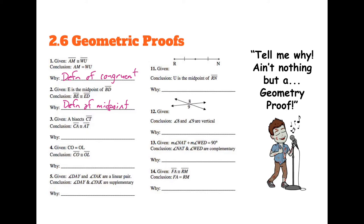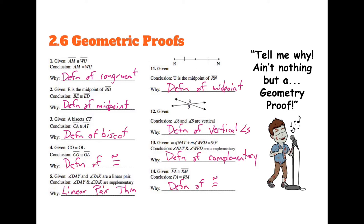Go ahead and try the rest on your own, then come back and you will see the answers. Here are the answers — I'm just going to go over some tricks and common mistakes. You'll see a lot of these are just definitions. If they say midpoint in it, then it's definition of midpoint. We've got the word bisect here, so that's going to be definition of bisect.